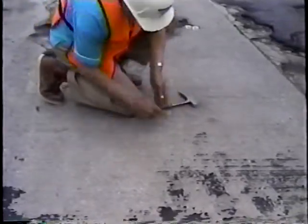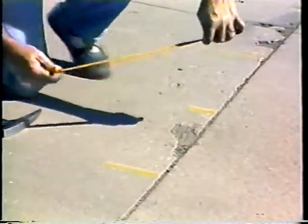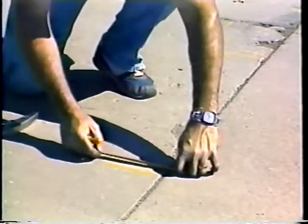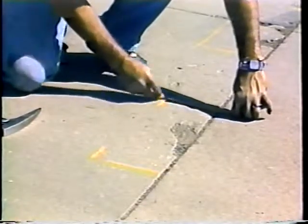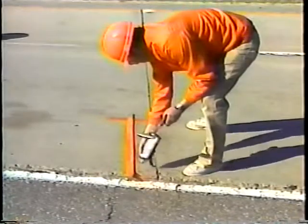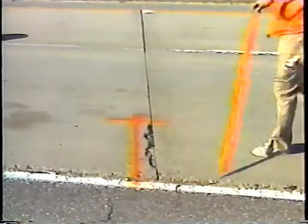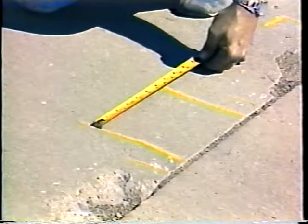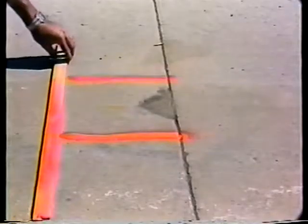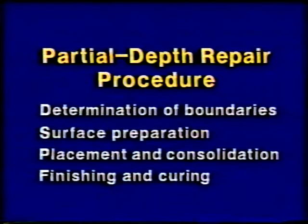Once the exact repair boundaries are established, they should be clearly marked. Normally, the marked area should extend four inches beyond the distress to ensure that all deteriorated concrete will be removed. If the marked area will extend within one foot of the shoulder, the repair should be extended to the shoulder. Similarly, if two repairs will be within two feet of each other, they should be marked as one repair. In all cases, the repair should be marked in a square or rectangular shape.